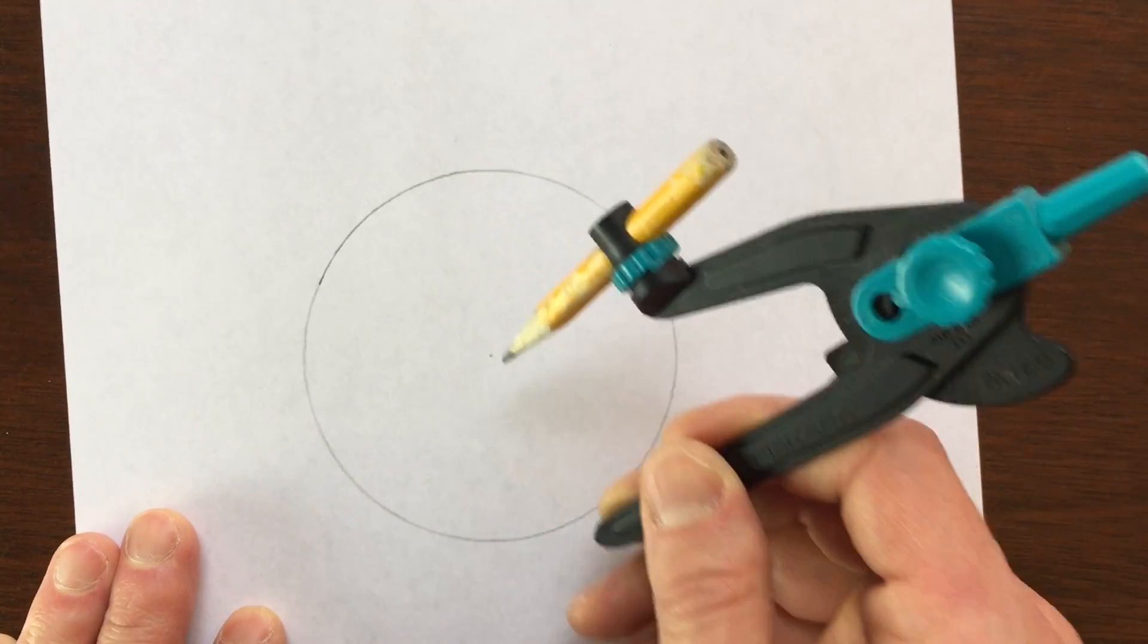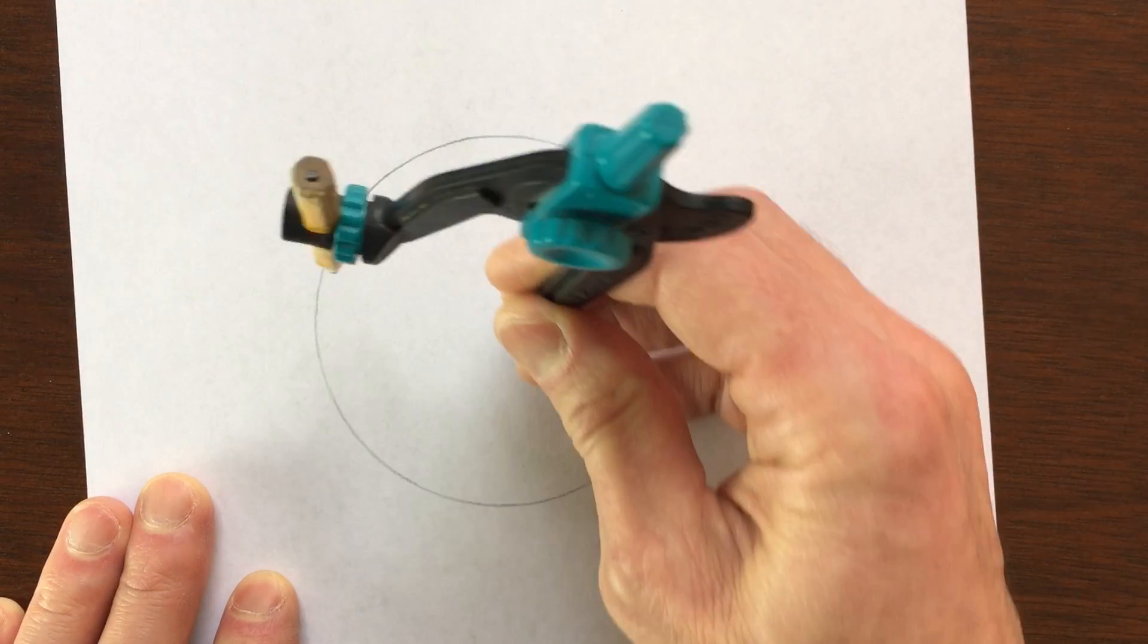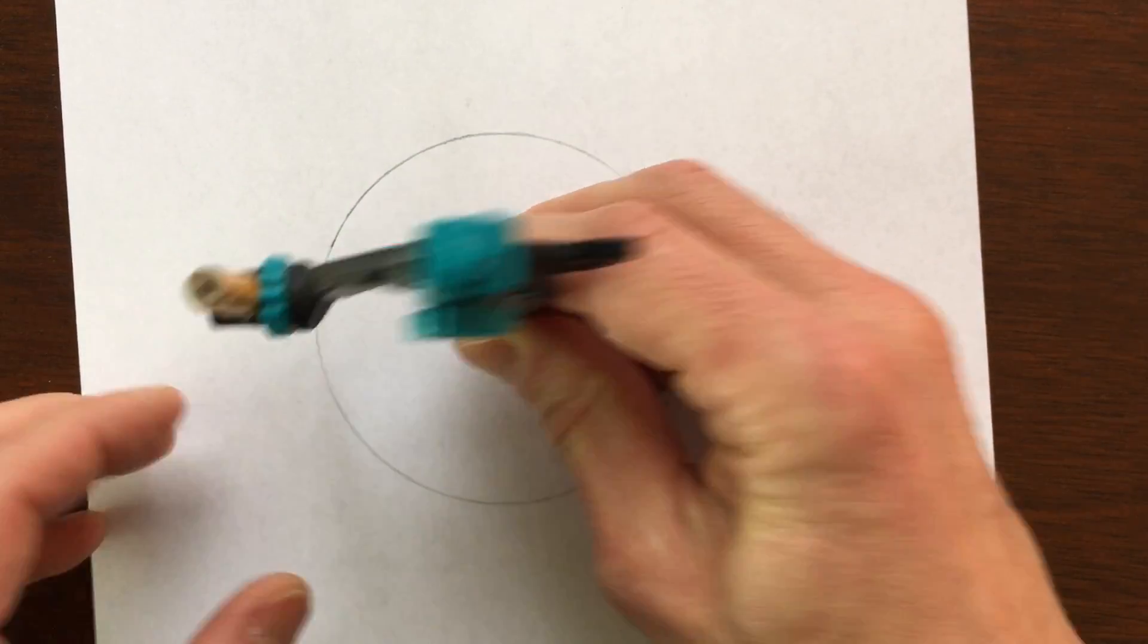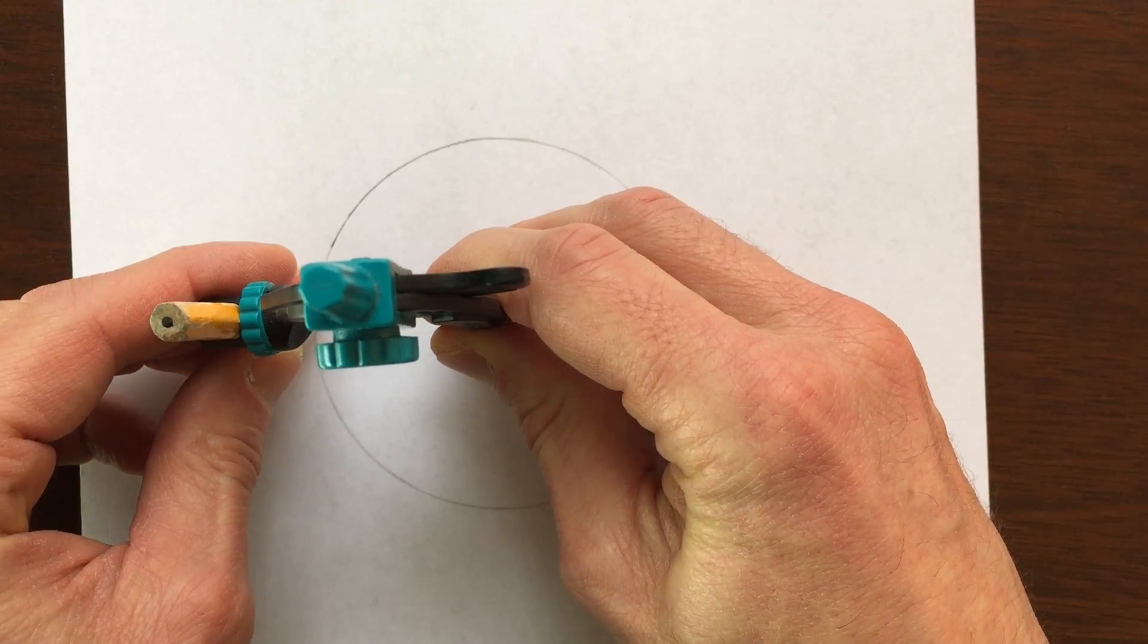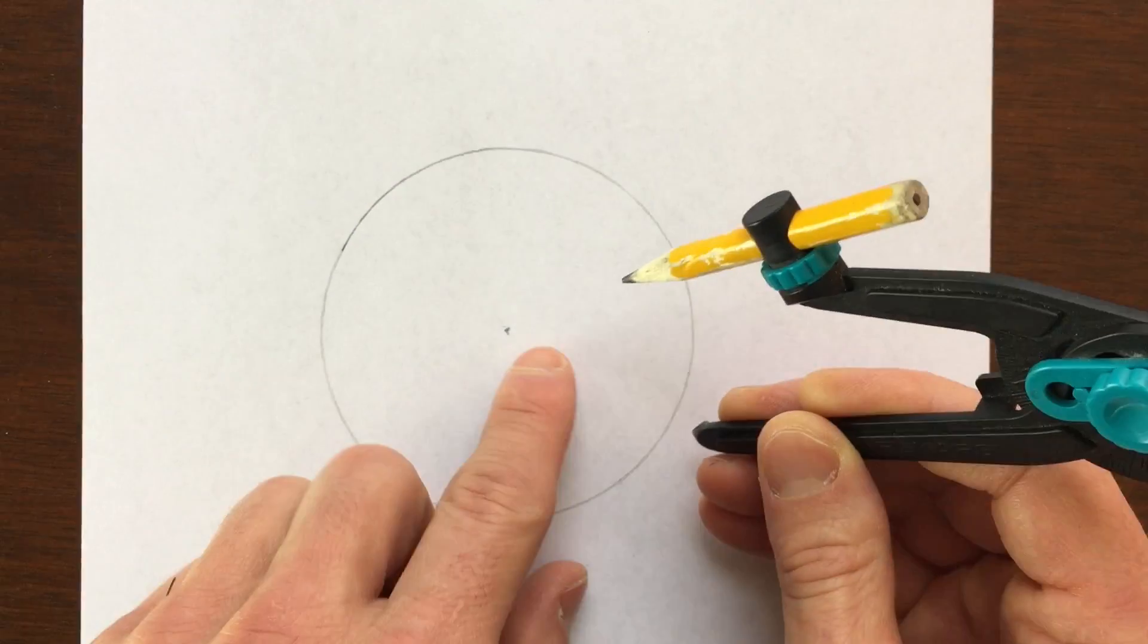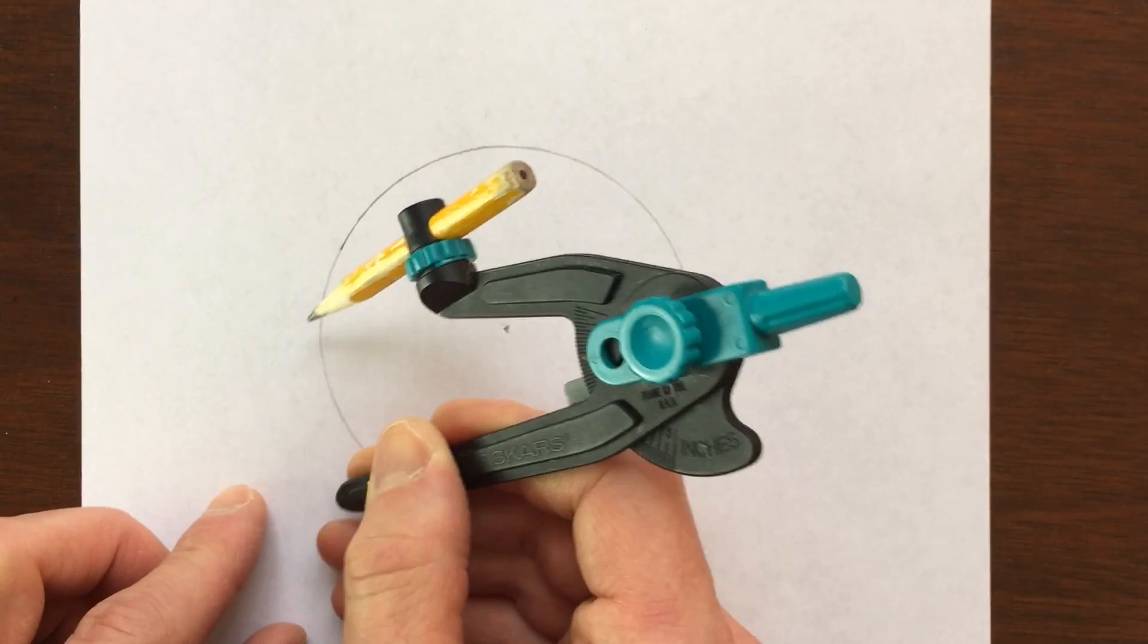Then the next thing you want to do is locate that center point right there, and then you want to measure the radius. So if they give you the circle, you want to go ahead and use a compass, open it up so that you're measuring the distance from the center to a point on the circle, and then what I would do is just put a little mark there.